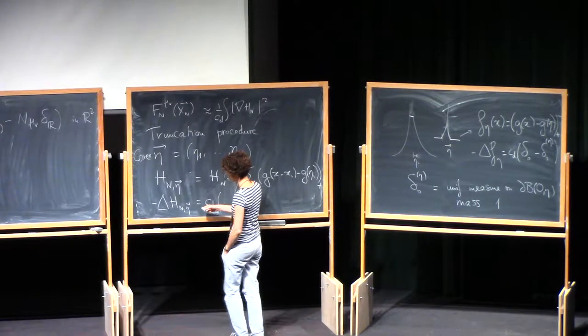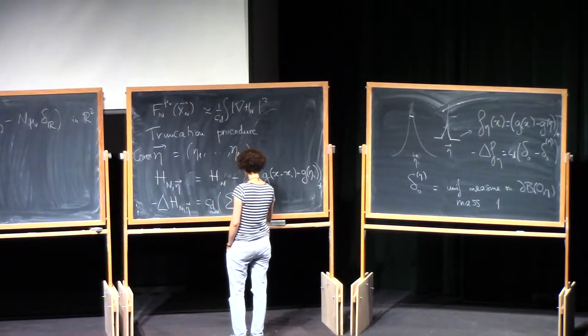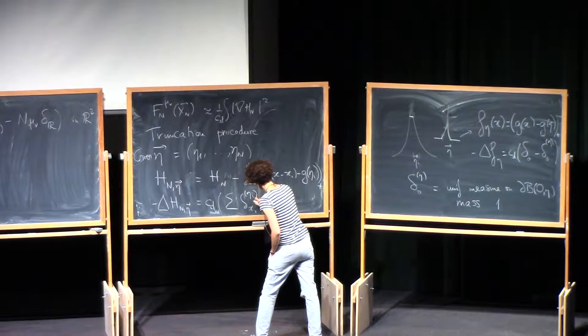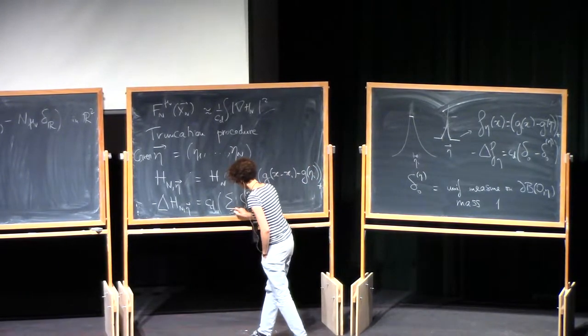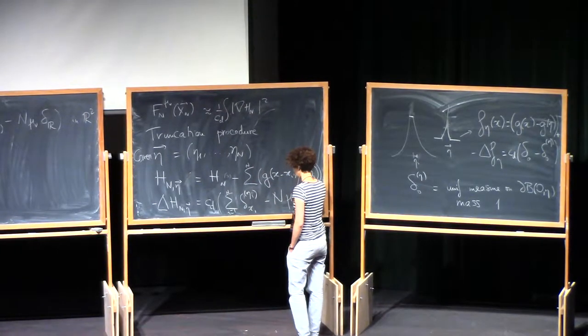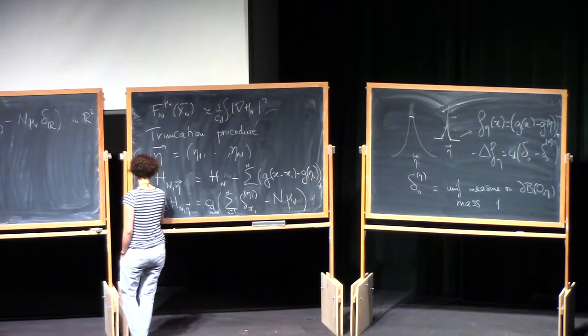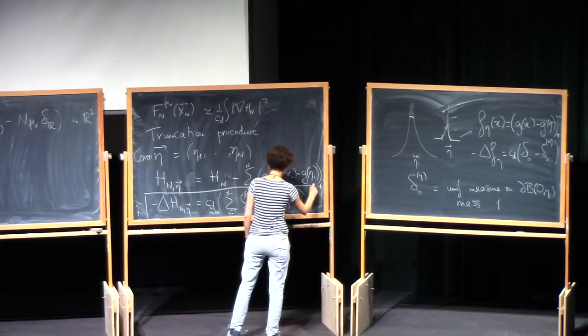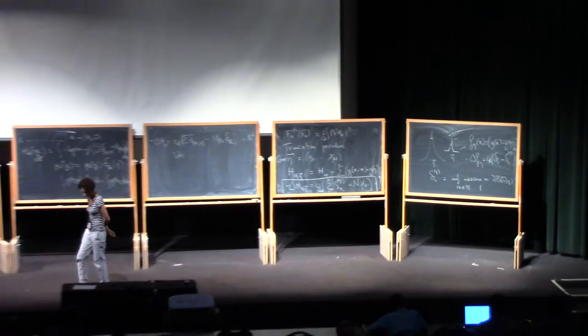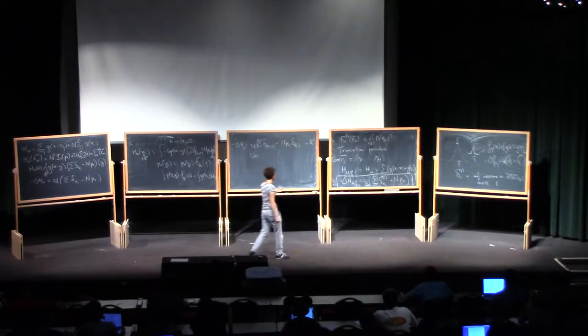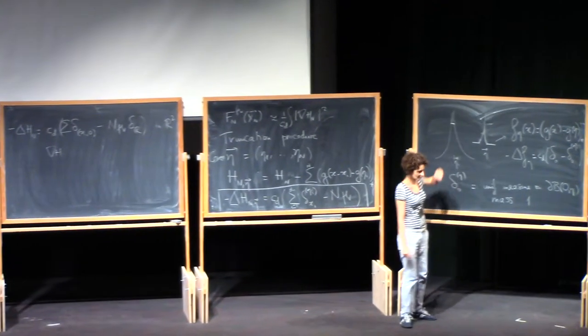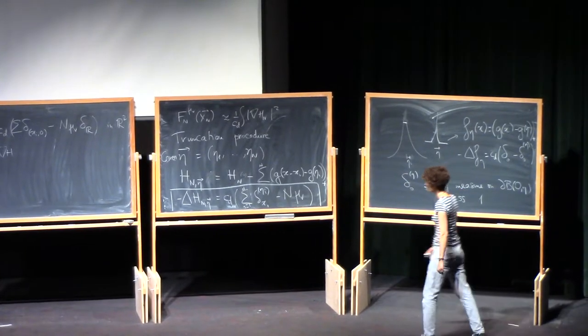So another way of saying all this is that this truncation procedure, what it does is it removes the Dirac mass and replaces it by a smeared Dirac mass, which is just smeared on the sphere of radius eta. So when I go to compute the Laplacian here, every time I had a Dirac mass, I replace it by a Dirac mass smeared at radius eta i. And then nothing changes, the rest is the same. So it's one way of regularizing these potentials that are singular.